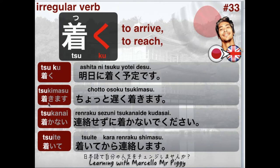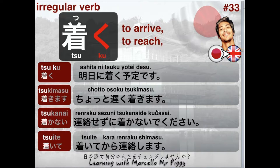The masu form is tsukimasu. For example: chotto osoku tsukimasu — I'll be arriving a little bit late. Let's say somebody's waiting for you and you send them a message. You could say osoku tsuku yotei desu if your flight is delayed, but yotei has this meaning of planning in advance, so I would just say chotto osoku tsukimasu, because you didn't really plan to arrive late.